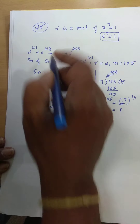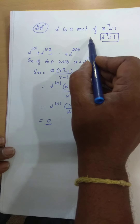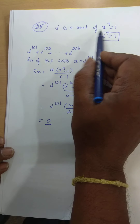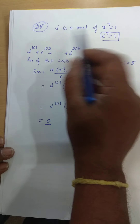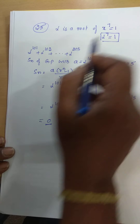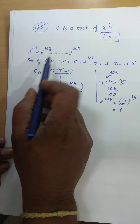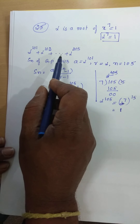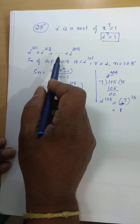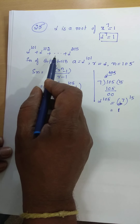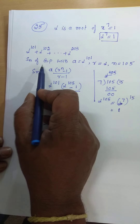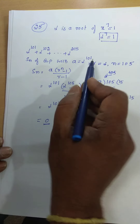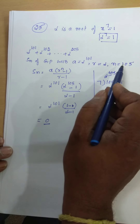Let's observe — alpha is given as a root of x power 7 is equal to 1. Therefore, alpha power 7 is equal to 1. They are asking the value of this series. Since all terms are multiples of the same quantity — alpha — it is obviously a GP. Therefore, Sn of GP with a equal to alpha power 101, r equal to alpha, and n equal to 105.